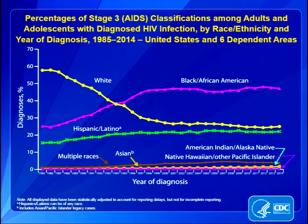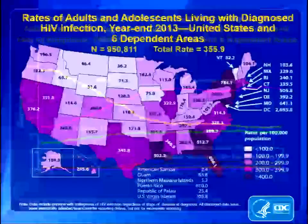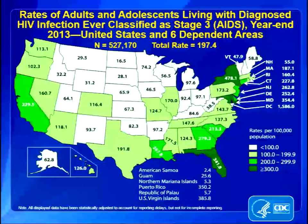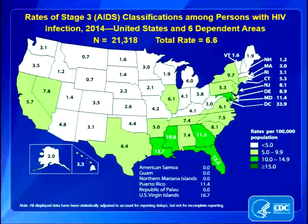Looking at diagnosis of AIDS and death due to AIDS, there were huge drops when we had much more effective therapy back in the 90s. That has continued as therapy has become better, better tolerated, and easier to take. The incidence of AIDS based on race or ethnicity and by state is also presented, with darker colors indicating higher incidence per capita of HIV infection.